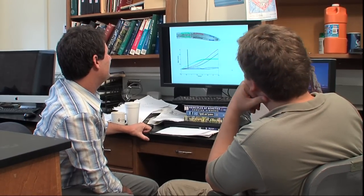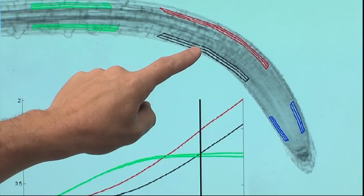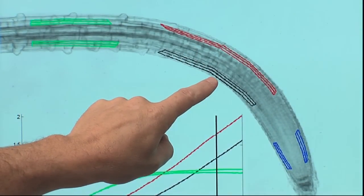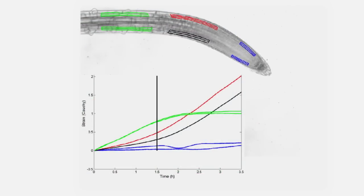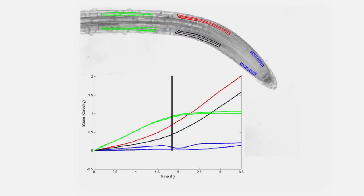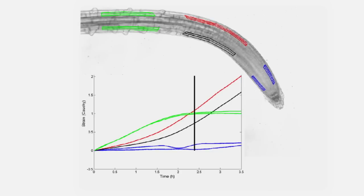The time-lapse movies are loaded into a computer. So you've isolated regions of interest on the upper and lower sides of the root. And an algorithm measures cellular growth rates in the root with pinpoint accuracy, as well as the angle and curvature of the root tip.